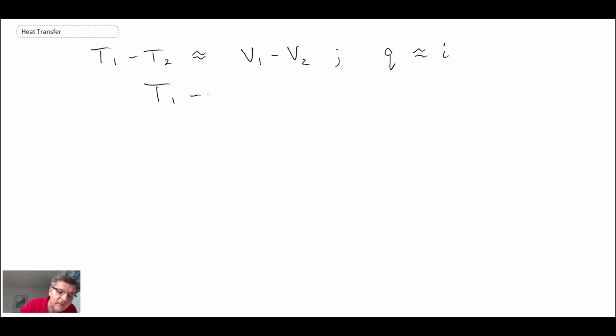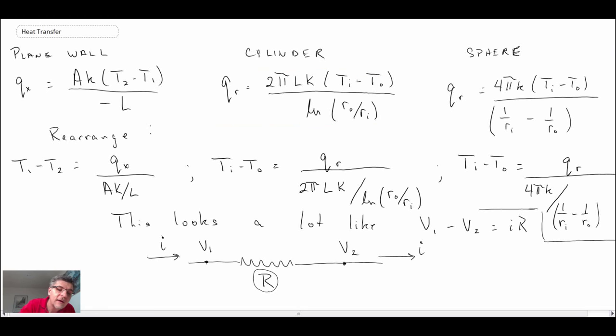And so with that, what we can do is we can rewrite our temperature difference and our heat flux, and we introduce this new term here, this RT. We haven't seen this before, but what RT is, is everything that was in the denominator on the right-hand side of our equation. So that's what RT comes out to be.